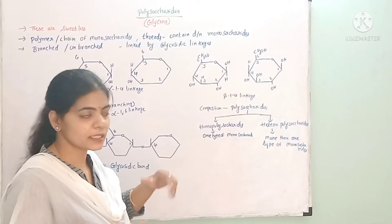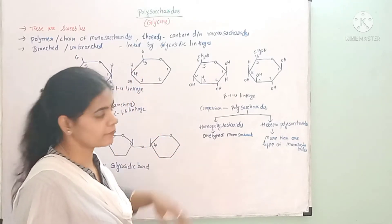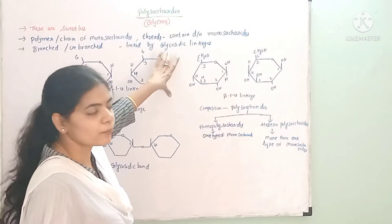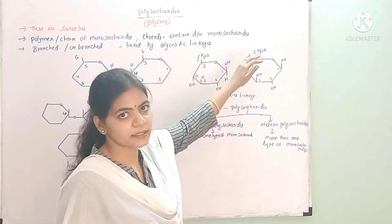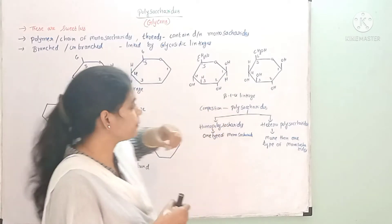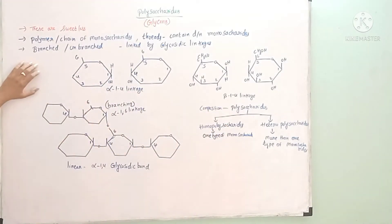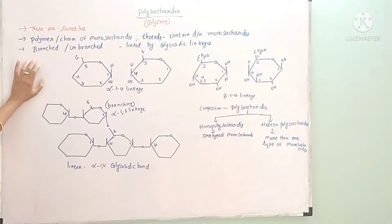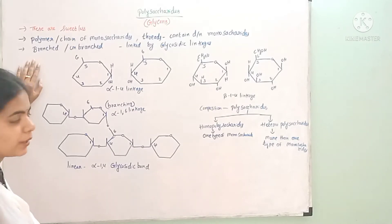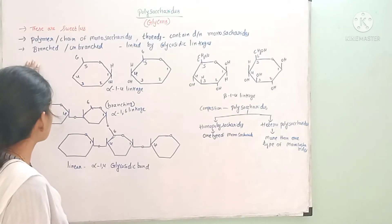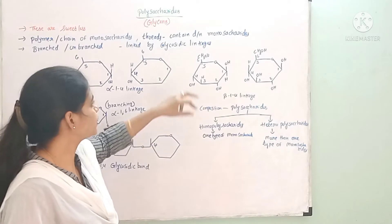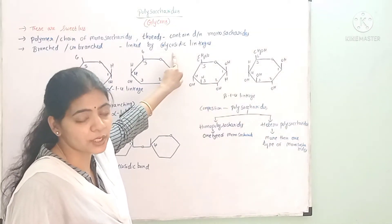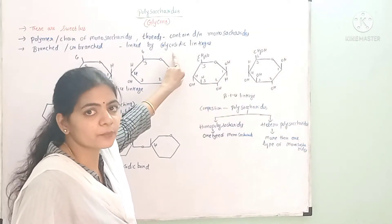Polysaccharides can exist in thread forms and are made up of different monosaccharides arranged in various ways. They can form branched and unbranched structures. These branches and unbranched chains are connected by means of glycosidic linkages and glycosidic bonds.